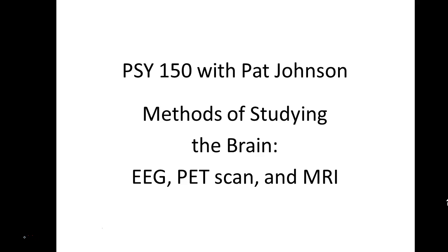Now, the EEG, the PET scan, and the MRI are not the first ways that scientists used to study the brain. Methods that were used prior to these more modern imaging techniques were to watch a person whose brain had been injured and see how their behavior changed. For example, you're studying Phineas Gage in this chapter, and Phineas Gage had a horrendous brain injury where a rod went through his brain.